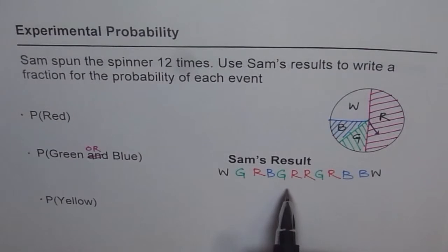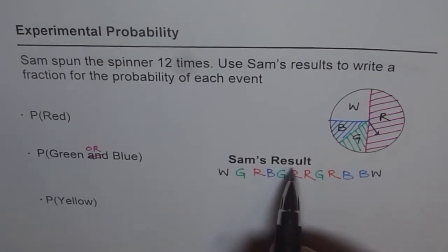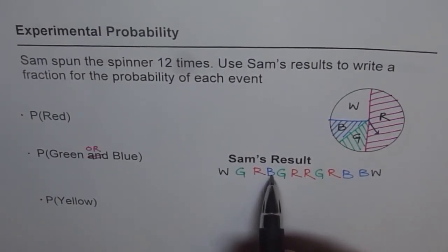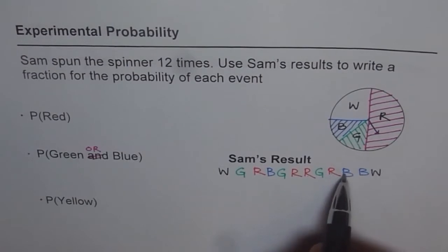Now, what is the probability of getting red from Sam's results? So that means, how many times did Sam spin? 1, 2, 3, 4, 5, 6, 7, 8, 9, 10, 11, 12. I know it's written there, but there is no harm in counting also.